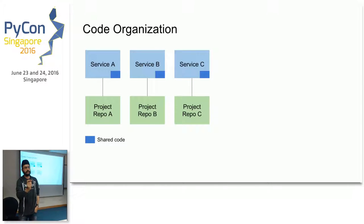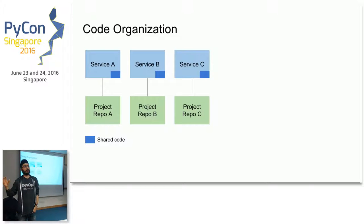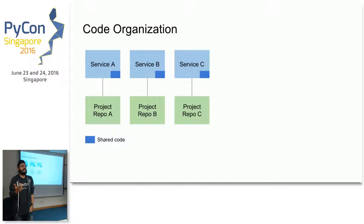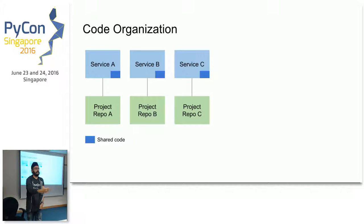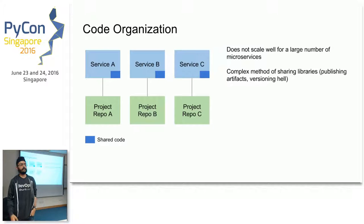One approach is to publish shared code as artifacts — jar files, Ruby gems, or Python eggs — and have other services import them with versioning. But then you end up in version hell. If I maintain a library with 50 downstream services using my code and I want to make a tiny function improvement that doesn't change the API, I have to go into all 50 repositories and make that change. That's definitely a productivity nightmare.